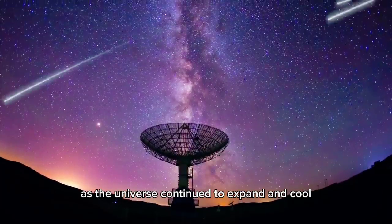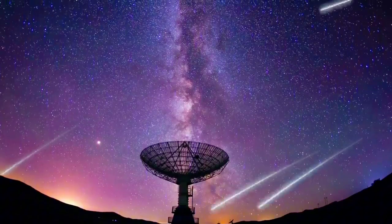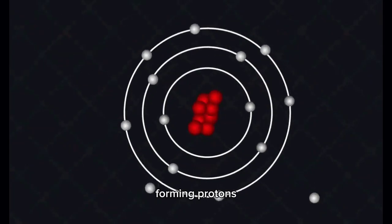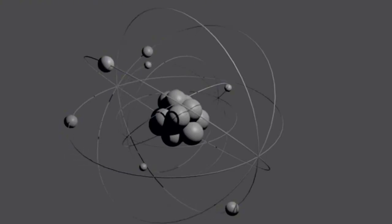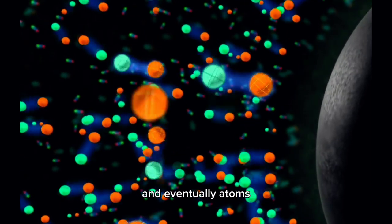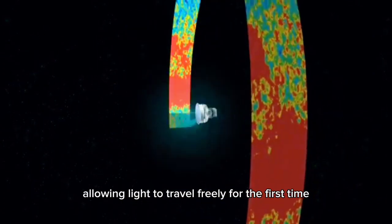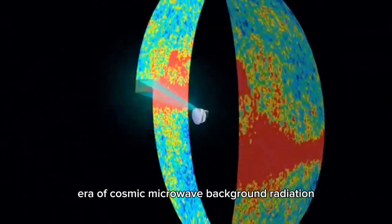As the universe continued to expand and cool, particles gradually decoupled from the primordial plasma, forming protons, neutrons, and eventually atoms. The universe became transparent, allowing light to travel freely for the first time, heralding the dawn of the era of cosmic microwave background radiation.